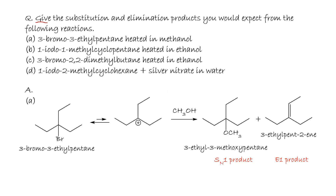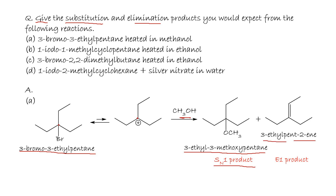Give the substitution and elimination products expected from 3-bromo-3-ethylpentane heated in methanol. This is a tertiary alkyl halide, so ionization gives a tertiary carbocation, giving 3-ethyl-3-methoxypentane as the SN1 product and 3-ethylpent-2-ene as the E1 product.